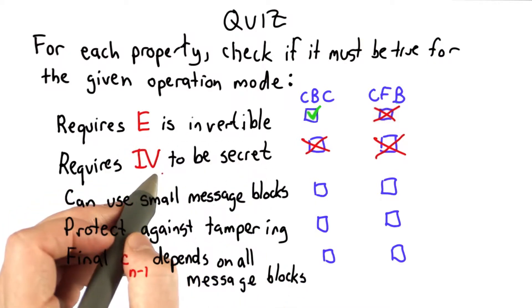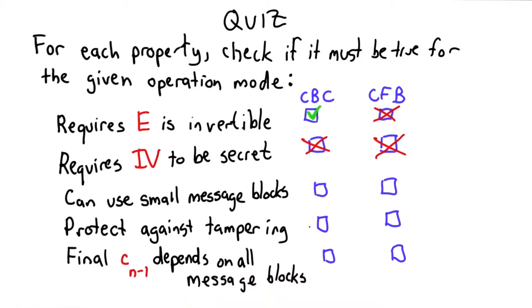What's important about the IV for both of these is that it's not reused, that a unique IV is used to avoid the possibility that the same block is encrypted the same way.